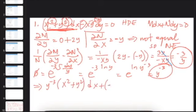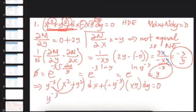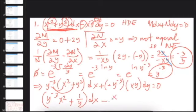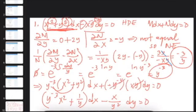That gives e to negative 3 ln x, or e to ln of x to the negative 3, which equals x to the negative 3. So the integrating factor is 1 over x cubed. Multiplying through: 1 over x cubed times x squared plus y squared dx minus 1 over x cubed times xy dy equals zero. Distributing, the new DE becomes x to the negative 1 plus y squared over x cubed dx minus y over x squared dy equals zero. Now perform the second test for exactness.